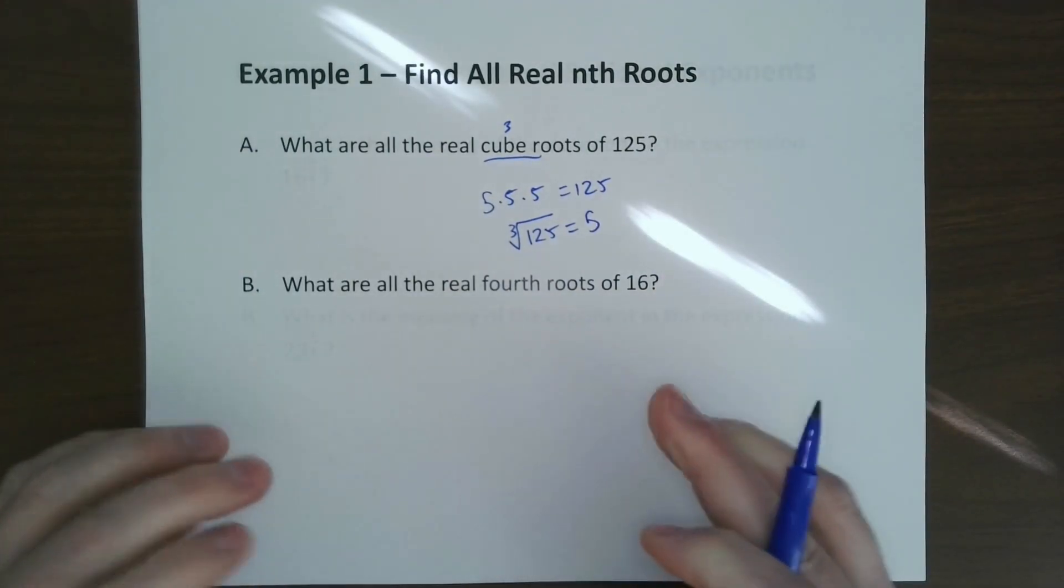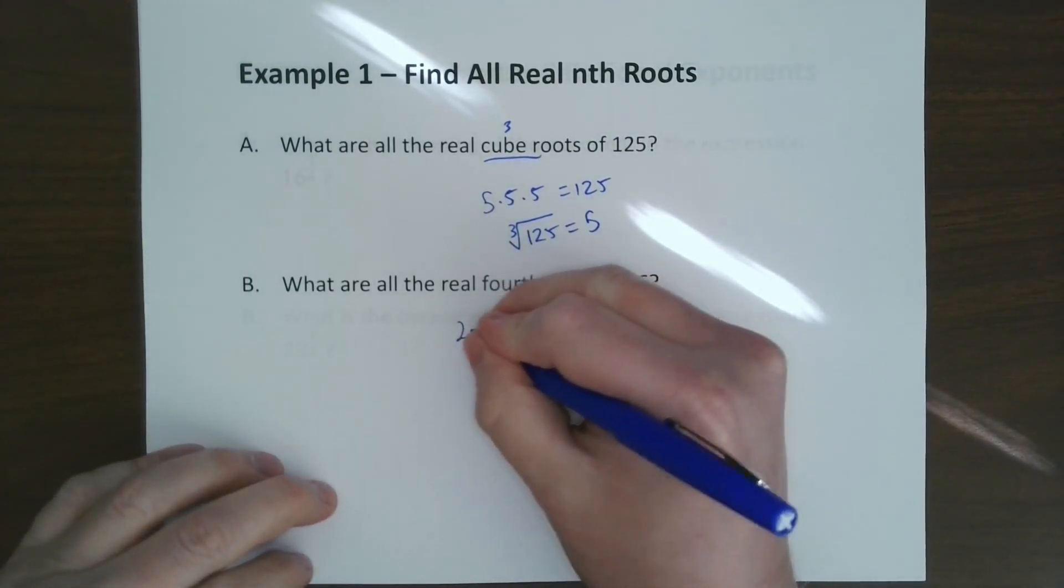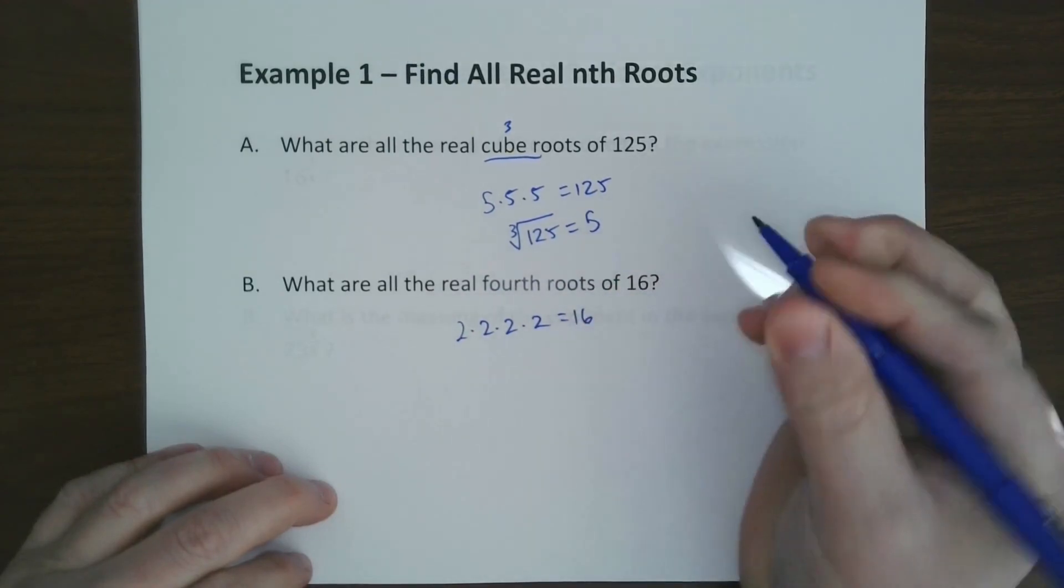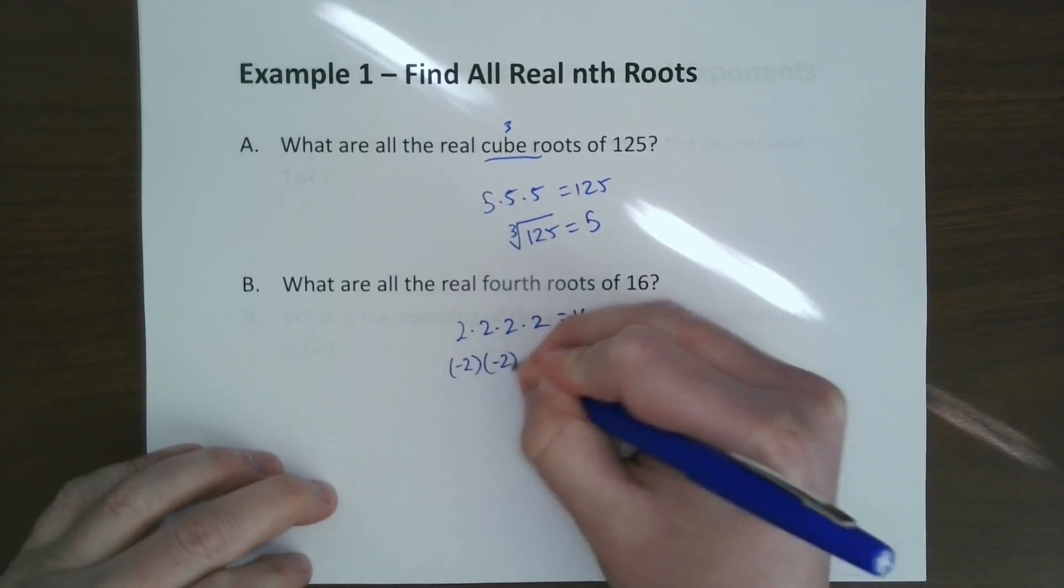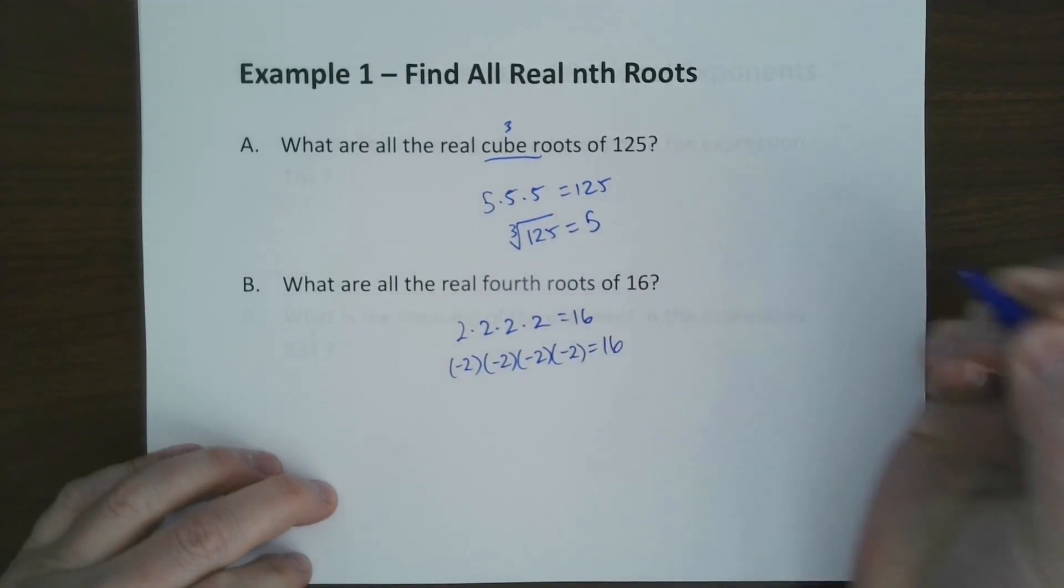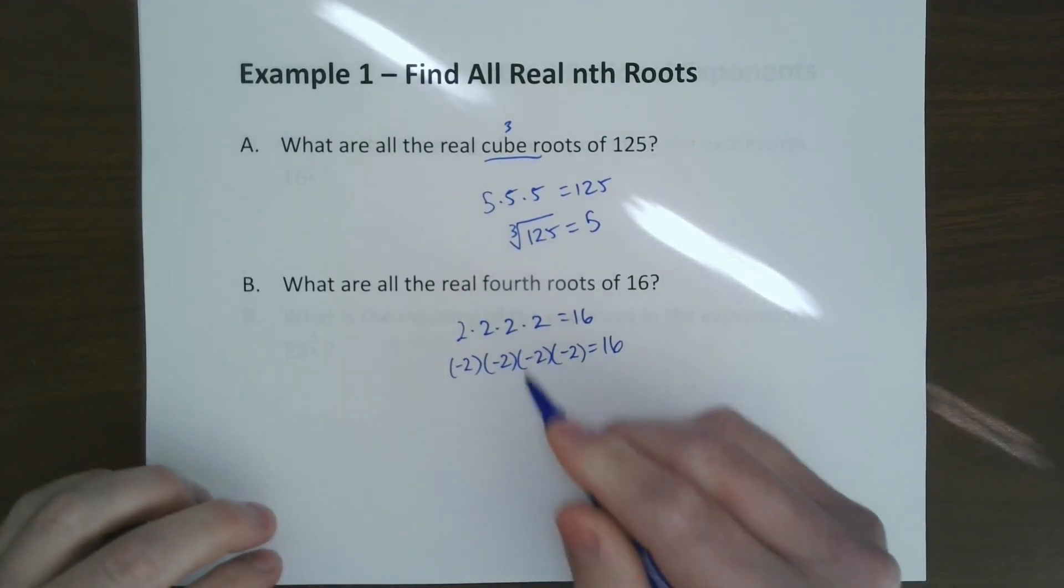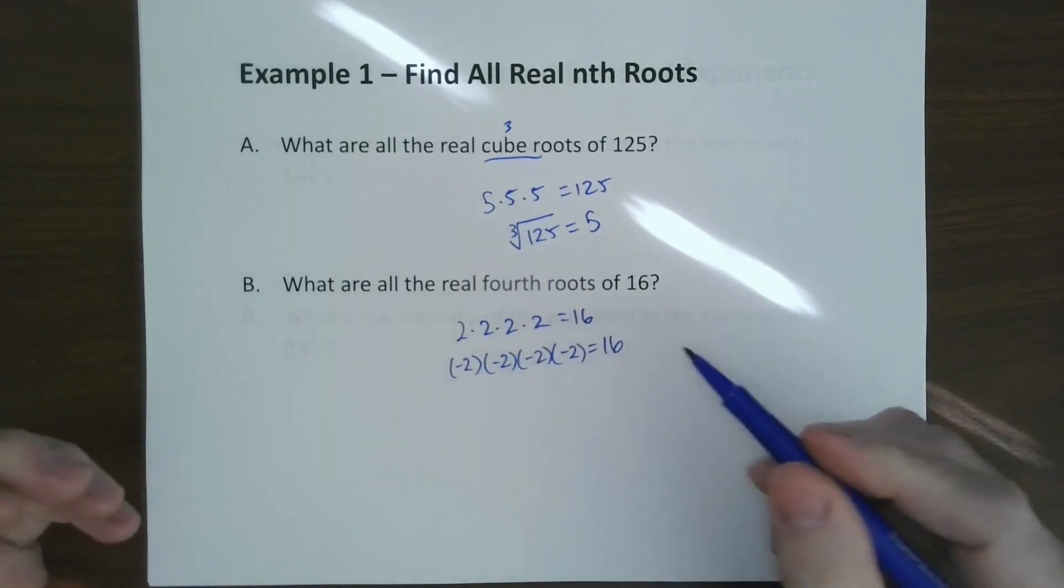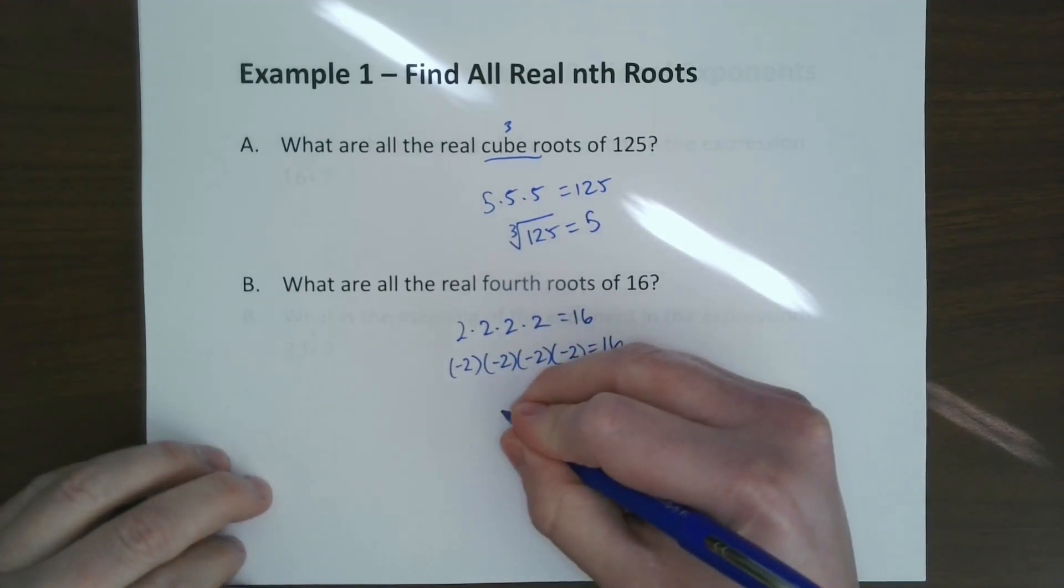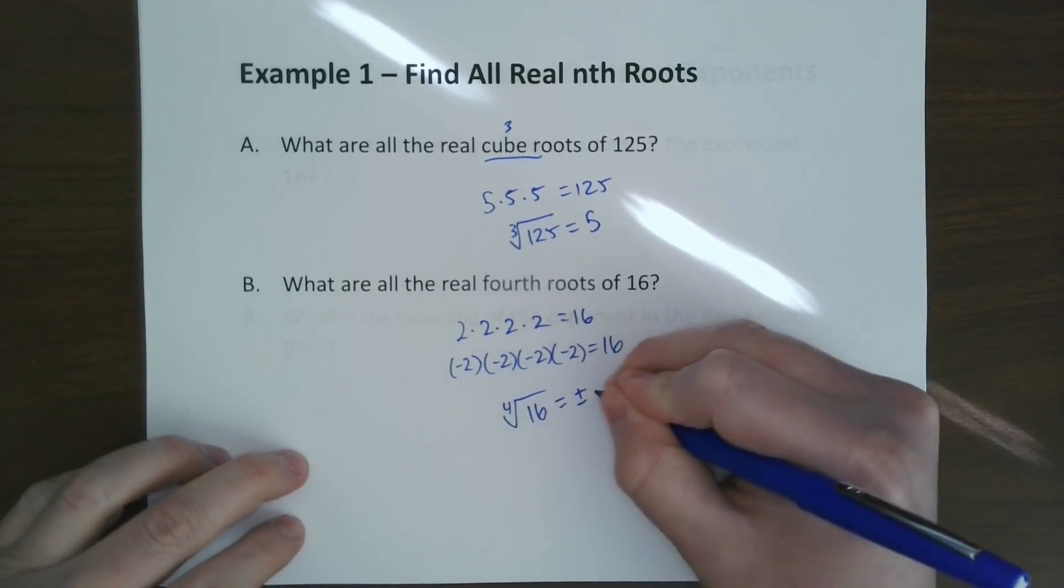The fourth root is what multiplied to itself 4 times is 16. We got 2 times 2 times 2 times 2 is 16, but we also have negative 2 times negative 2 times negative 2 times negative 2 is also 16. That means the roots of evens are positive negative, but the roots of odds are just positive or negative. The fourth root of 16 would be plus or minus 2.